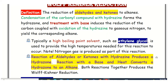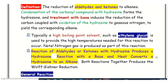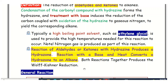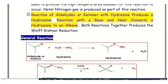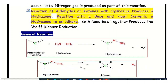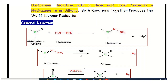In summary: aldehydes and ketones react with hydrazine and are converted into the intermediate hydrazone molecule. In the next step, potassium hydroxide and heat convert the hydrazone molecule into the alkane. This is the general reaction mechanism for the Wolff-Kishner reduction.